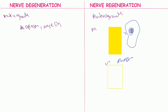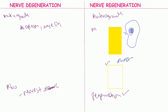In retrograde nerve degeneration, the process is the same as above, but it only occurs up to the nearest node of Ranvier.